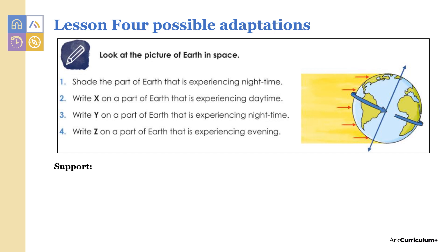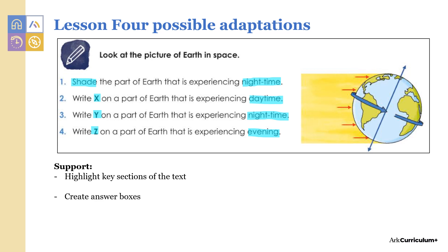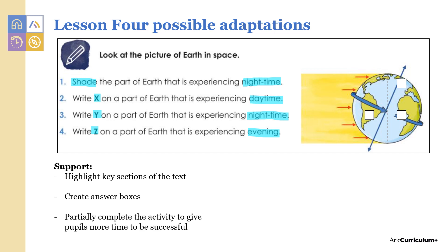In lesson four, pupils need to shade and write on the image of the planet Earth to show the different times of day. You could support pupils by highlighting the key words in the text. You could create answer boxes on the image to show pupils where to write their answers, or you could even partially complete the activity to give pupils more time to be successful with fewer questions.